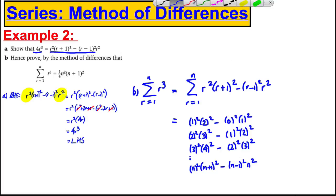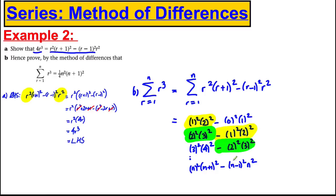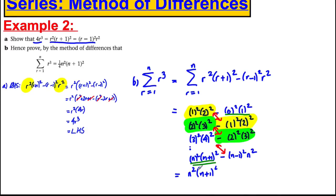You can see that terms cancel diagonally: 1²×2² cancels with the negative 1²×2², and 2²×3² cancels with the negative 2²×3². The first term vanishes since 0² = 0, and you're left with just n²(n+1)². Since the identity gives 4r³ = that expression, to get r³ we divide by 4, giving the sum of r³ from 1 to n equals ¼n²(n+1)². And we're done.